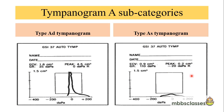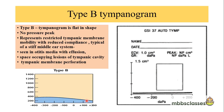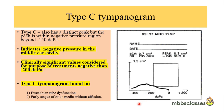Type B tympanogram is the flat type of curve with no pressure peak, representing restricted tympanic membrane mobility with reduced compliance, suggestive of stiffness in the middle ear system. Conditions associated with Type B tympanogram include otitis media with effusion, space-occupying lesions of the tympanic cavity, and tympanic membrane perforation.